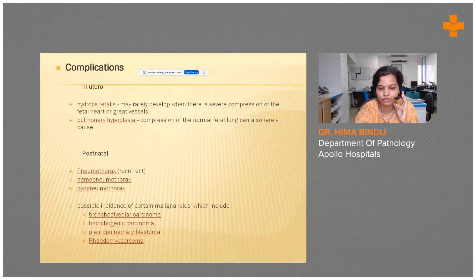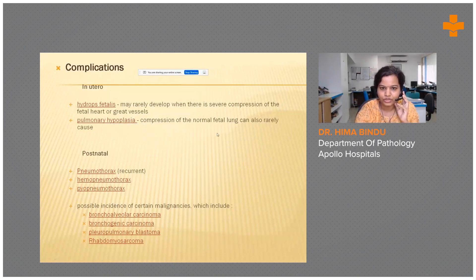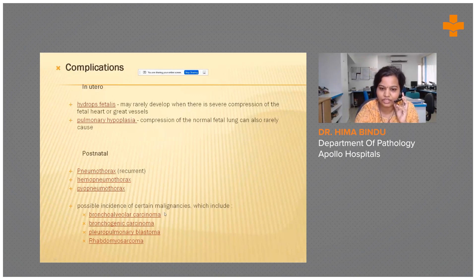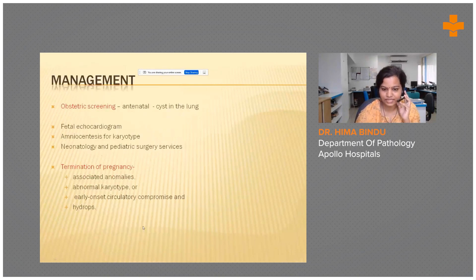Complications of CCAM can be divided into antenatal and postnatal. Antenatally, the fetus may develop hydrops due to compression of the fetal heart, great vessels, and normal lung, which can be fatal. Postnatal complications include pneumothorax, hemothorax, and hydropneumothorax. If unresected, malignant transformation may occur, with reported cases of bronchoalveolar carcinoma, bronchogenic carcinoma, neuropulmonary tumors, and rhabdomyosarcomas.